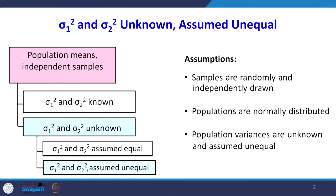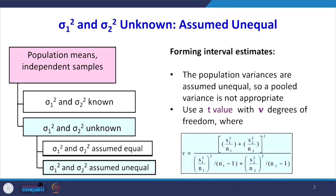The assumptions we have are: the samples are randomly and independently drawn, the populations are normally distributed, and the population variances are unknown and assumed unequal. Because the population variances are assumed unequal, a pooled variance is not appropriate.